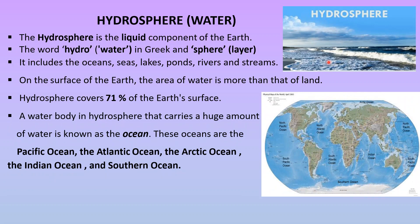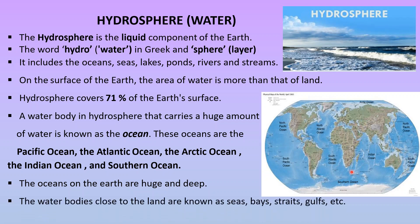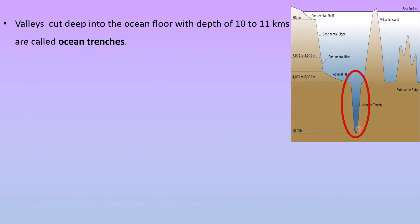A water body in the hydrosphere that carries a huge amount of water is known as an ocean. There are five oceans on the Earth's surface: the Pacific Ocean, the Atlantic Ocean, the Arctic Ocean, the Indian Ocean, and the Southern Ocean. The water bodies close to the land are known as seas, bays, straits, gulfs, etc. Valleys means a deep, narrow path between two mountains and hills. Valleys cut deep into the ocean floor with a depth of 10 to 11 kilometers are called ocean trenches.